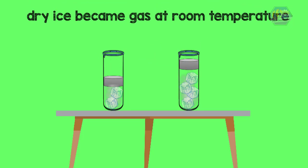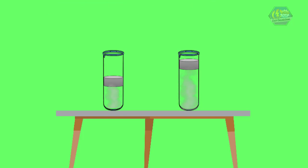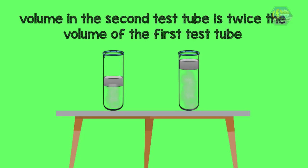When the dry ice became gas at room temperature and the pressure of the dry ice became equal to atmospheric pressure, he noticed that the volume in the second test tube is twice the volume of the first tube. The relationship of volume and amount follows this graph as shown.